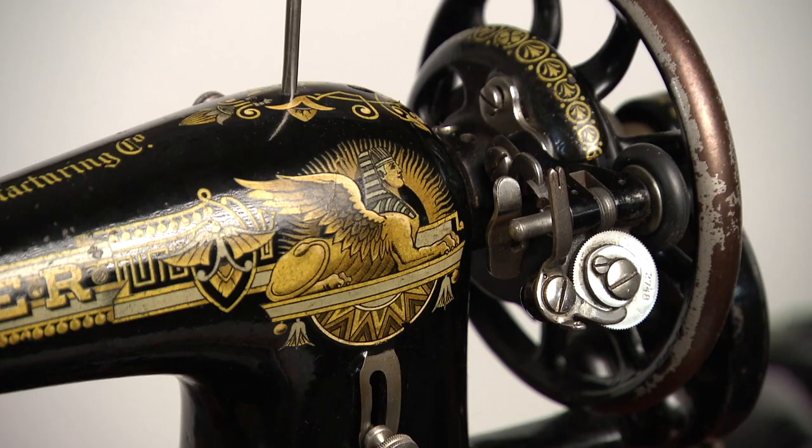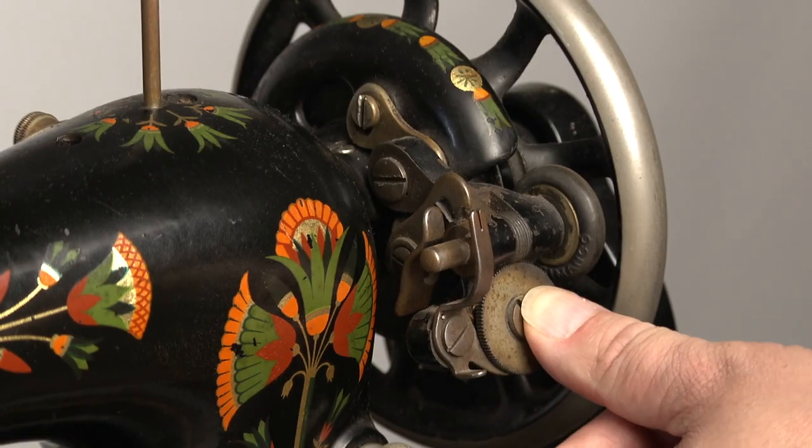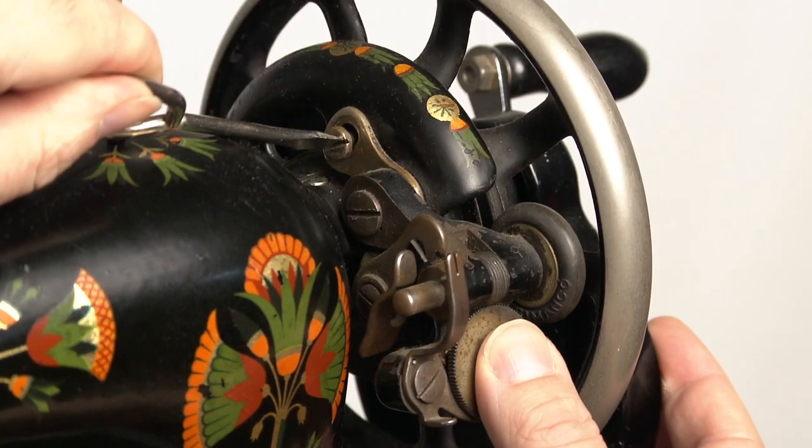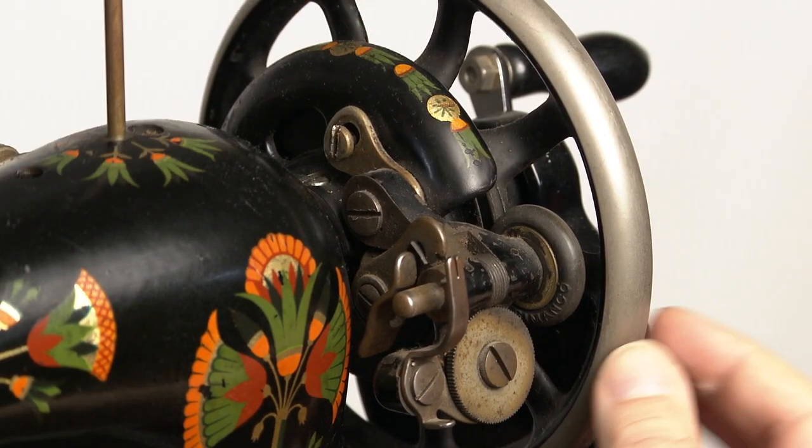When dealing with a classic winder with a cam use this method. Push the unit away from you until it locks into place. Then loosen this upper screw. Press down the unit and retighten it. And that's it.